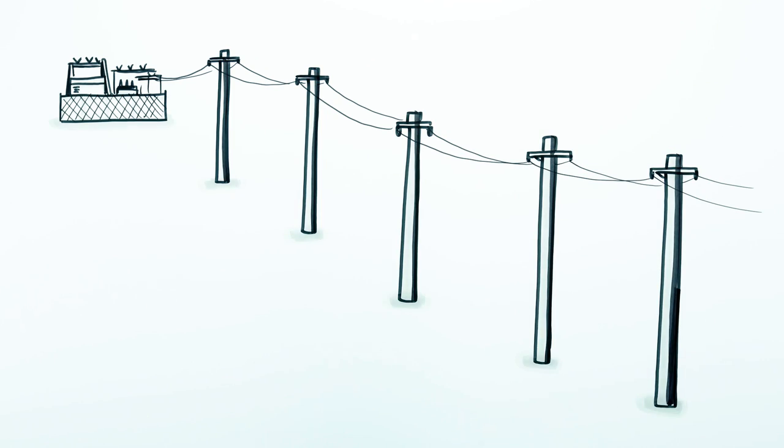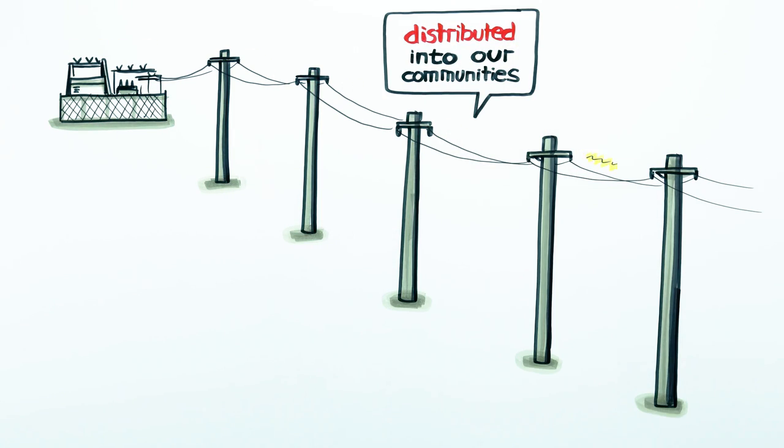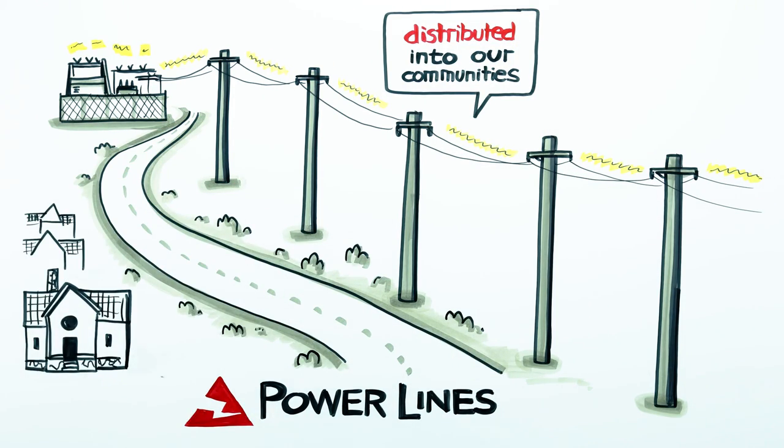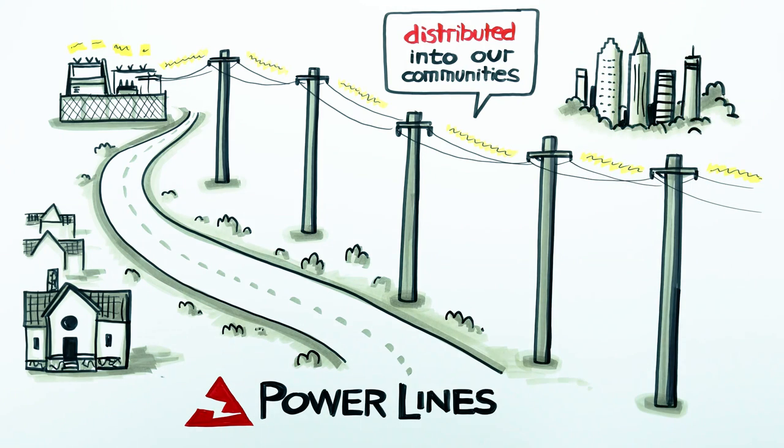This stepped down electricity is then distributed into our communities through power lines along city streets and highways. The energy is now much closer to our light bulbs.